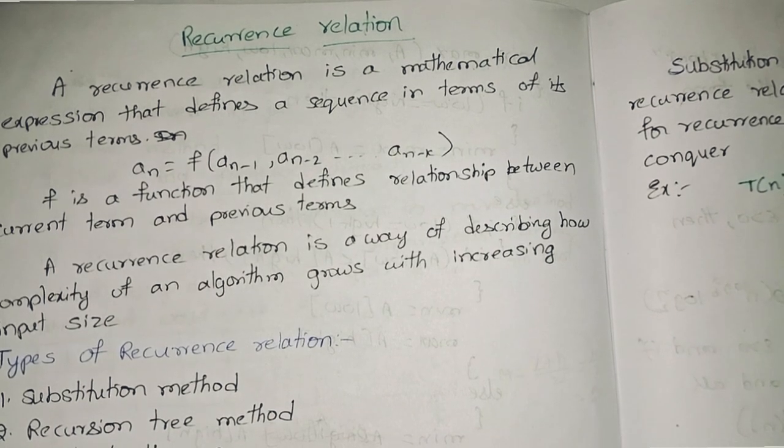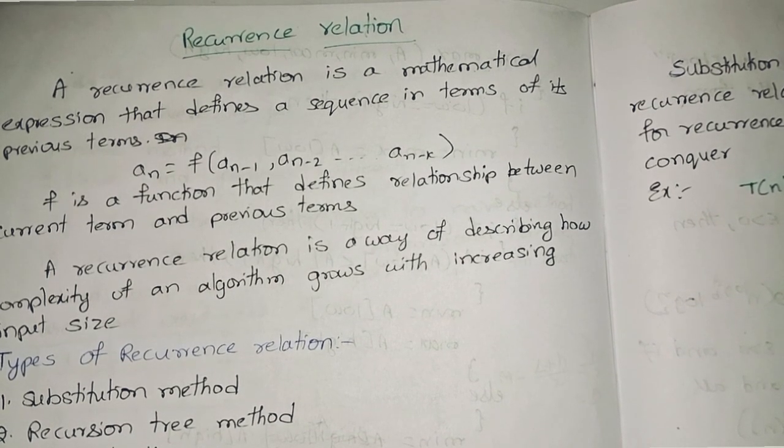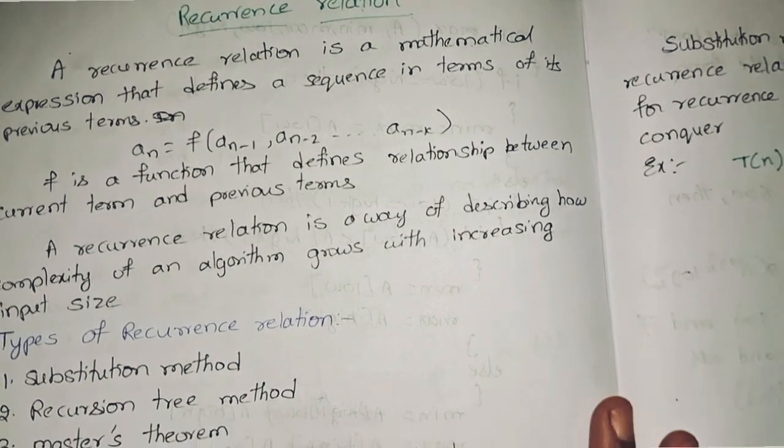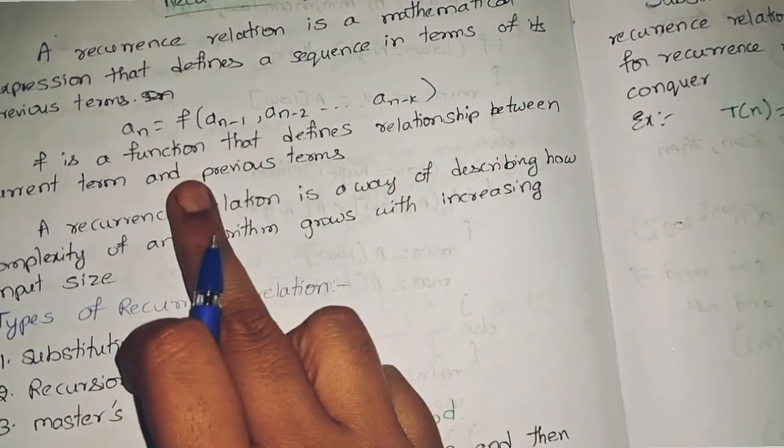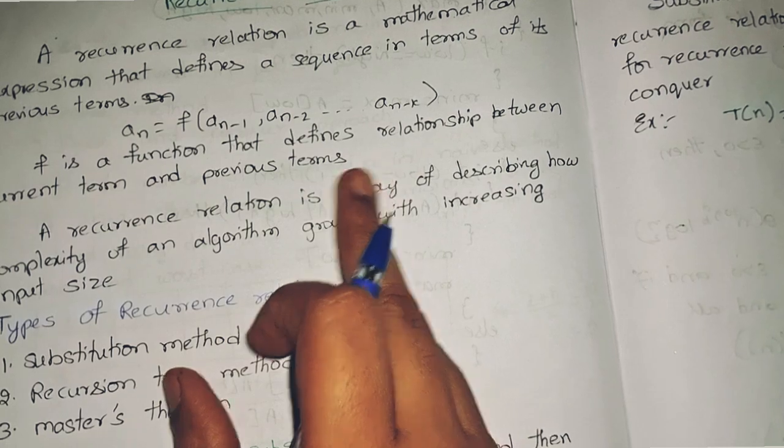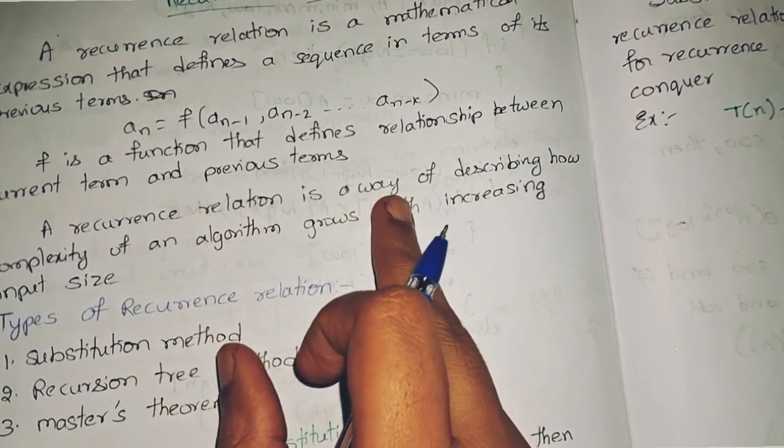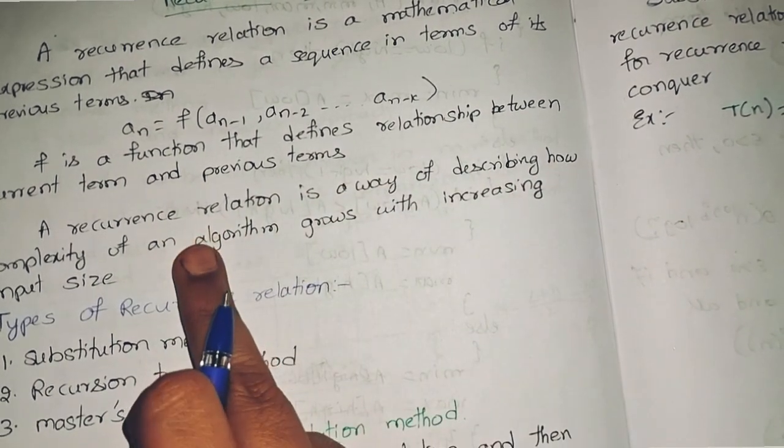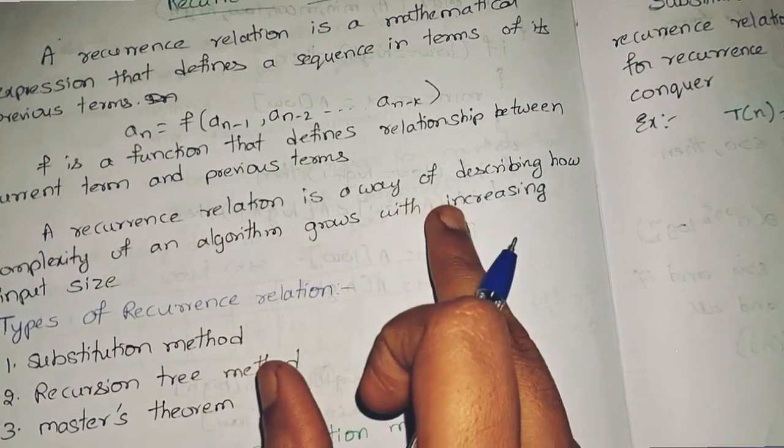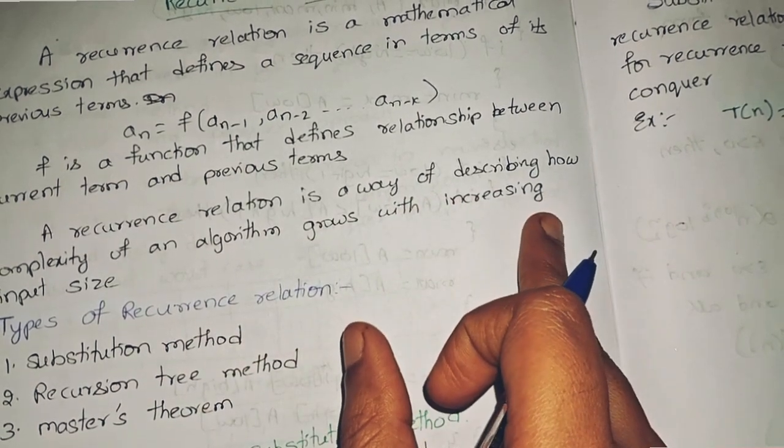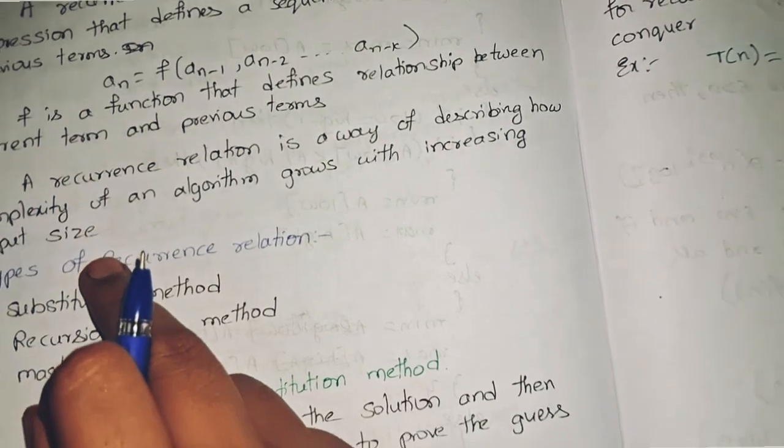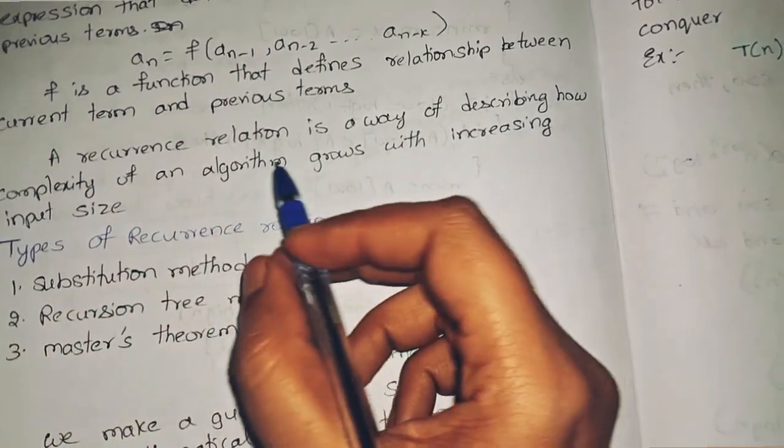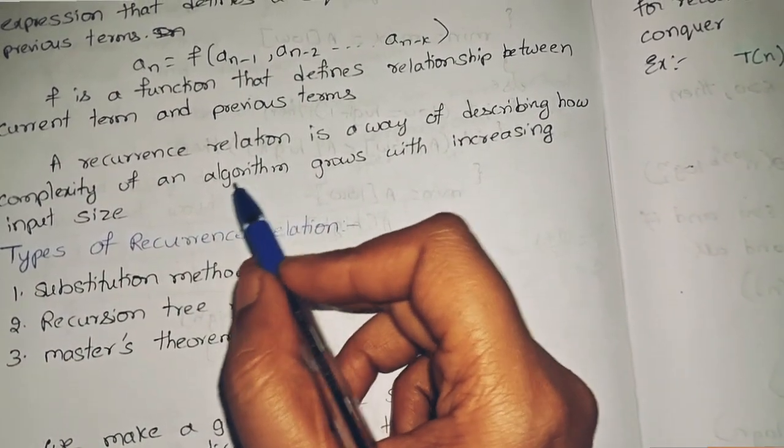Here F is a function that defines the relationship between current term and previous terms. A recurrence relation is a way of describing how complexity of an algorithm grows with increasing input size. If you are increasing the input size of the algorithm, the algorithm will become very complex.